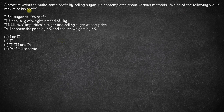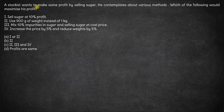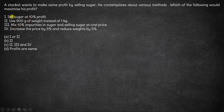Here we have a stockist who wants to make some profit by selling sugar. He contemplates about various methods. Which of the following would maximize his profit? These are the four options or types of profits that he can have. Let's look at each of these one by one.